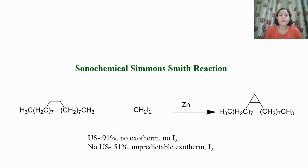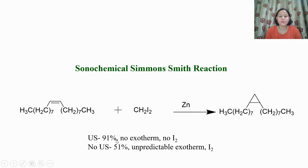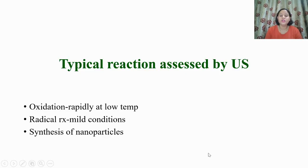The next example is the sonochemical Simmons-Smith reaction. Alkenes on reaction with methylene iodide in the presence of zinc give cyclopropane derivatives. With ultrasound, the reaction is not exothermic, no iodine is used, and it has 91% yield. Without ultrasound, the yield is lower at 51%, there can be exotherms, and iodine has to be used. Various types of reactions can be carried out using ultrasound, including oxidation reactions, radical reactions, and synthesis of nanoparticles.